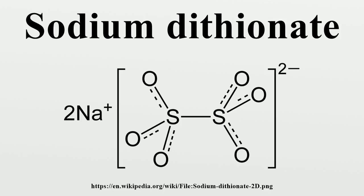The sulfur can be considered to be in its plus-five oxidation state. It should not be confused with sodium dithionite, Na2S2O4, which is a very different compound and is a powerful reducing agent with many uses in chemistry and biochemistry. Confusion between dithionate and dithionite is commonly encountered, even in manufacturers' catalogs.